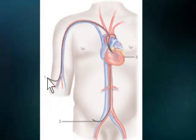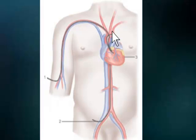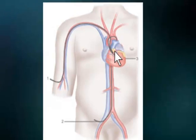Traditionally, CASP is measured by a catheter that goes in the arm, up and around, and then into the heart, lodging itself in the aorta right at the output of the heart.